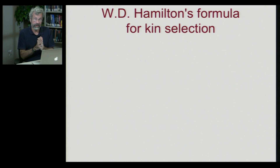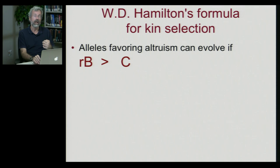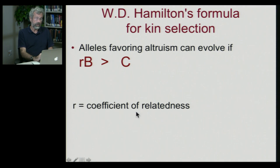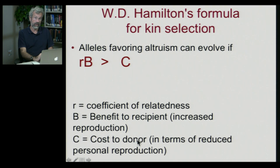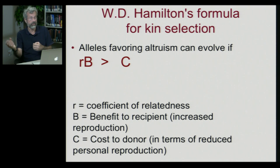Given these coefficients of kinship, and given that the more closely related you are the more likely you are to share alleles in common, one of the most famous biologists of the 20th century, Bill Hamilton, put together a very simple rule of thumb to tell us when individuals within families should be nice to each other. This is his formula for kin selection: alleles favoring altruism are expected to evolve whenever the coefficient of relatedness (R) times the benefit conferred to the recipient (B) exceeds the cost to the donor (C). B is the benefit through increased reproduction, and C is the cost in terms of reduced personal reproduction.